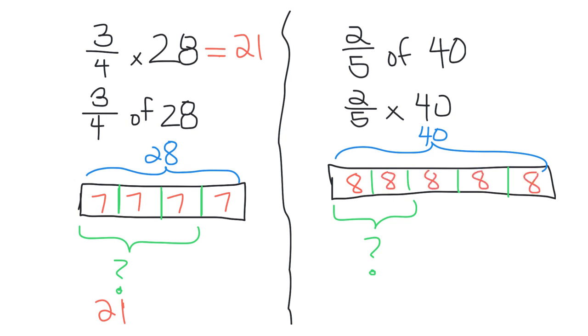And then I want two of those fifths, so these two, which is 16. So I got 2/5 times 40 is equal to 16.